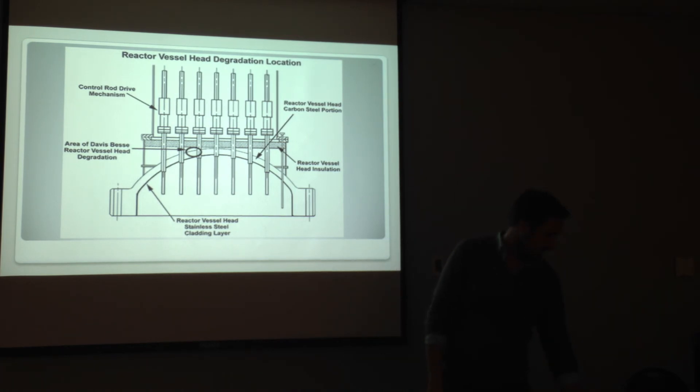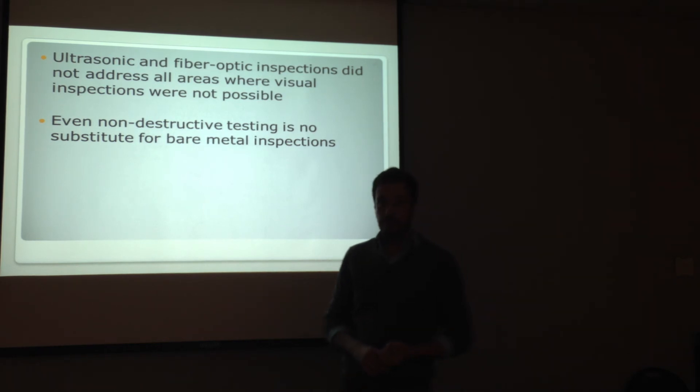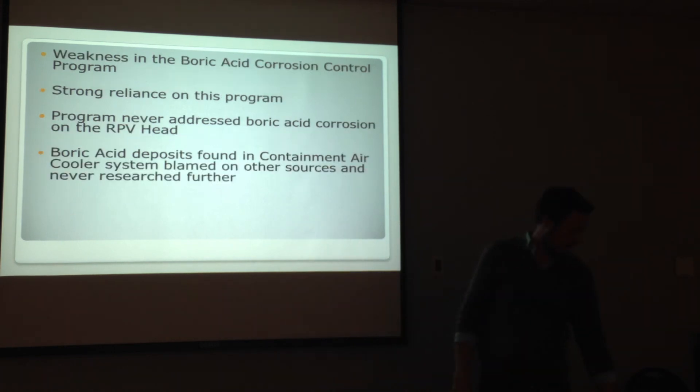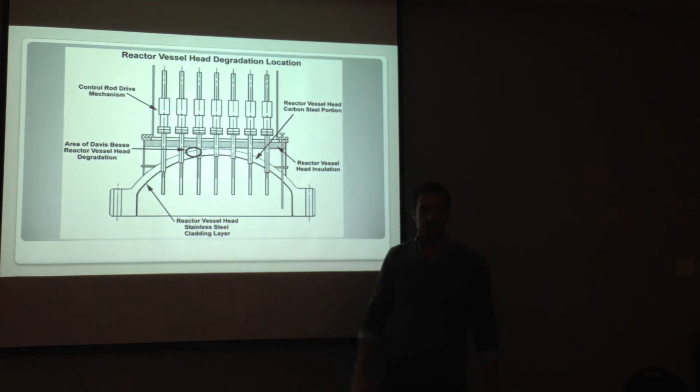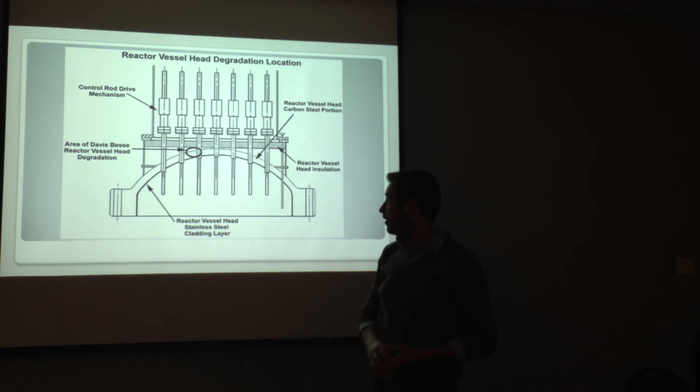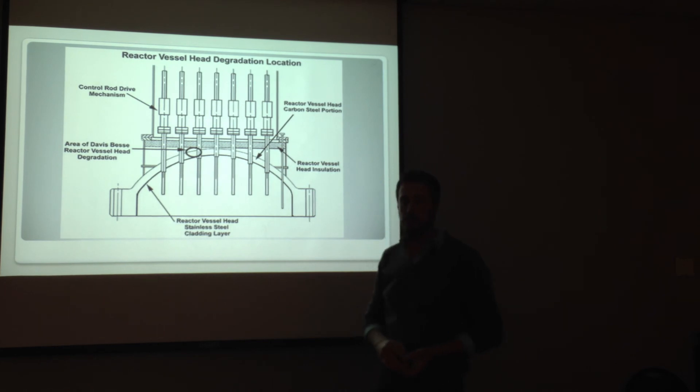And the final thing is that we discovered that there's really no substitute for visual inspections. We call them bare metal inspections. Basically, removing that layer of insulation and inspecting that reactor pressure vessel head. There's no substitute for it. Ultrasonic testing, if it would have been done farther down, would have helped. And would have aided in discovering this incident a lot sooner, possibly. But, there's really no substitute for actually inspecting that area there.